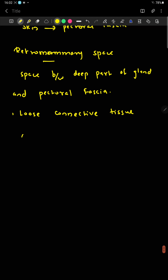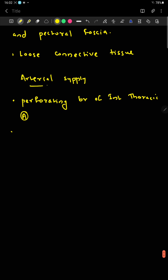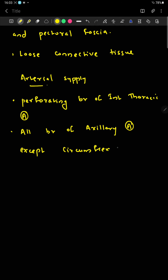The retromammary space is a loose connective tissue layer. The mammary gland gets its arterial supply from the perforating branches of the internal thoracic artery, and also from all branches of the axillary artery except the circumflex artery.